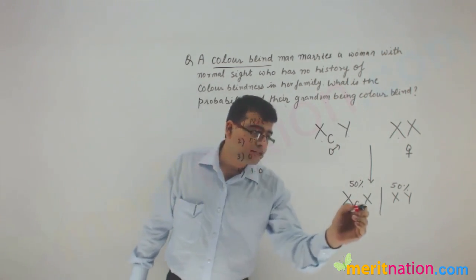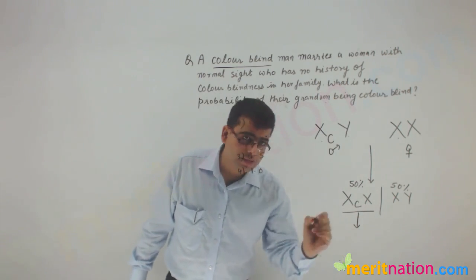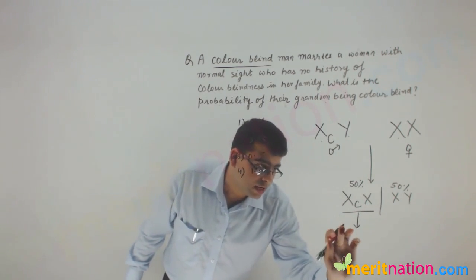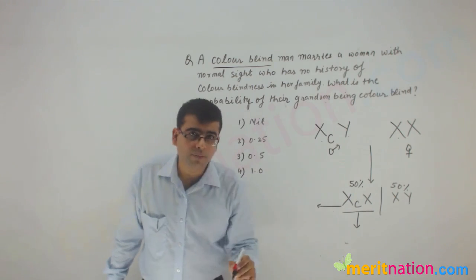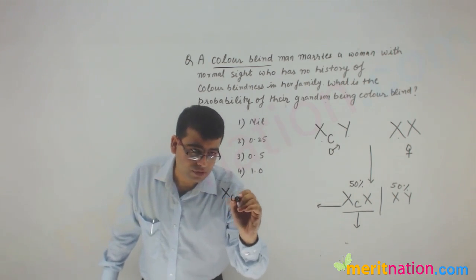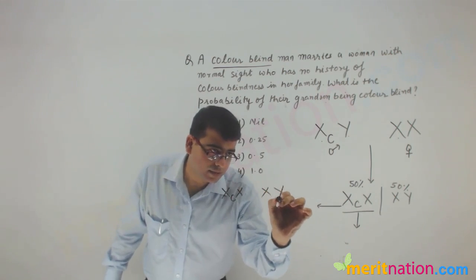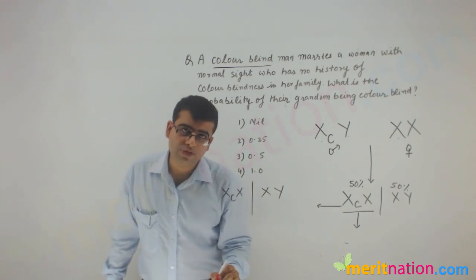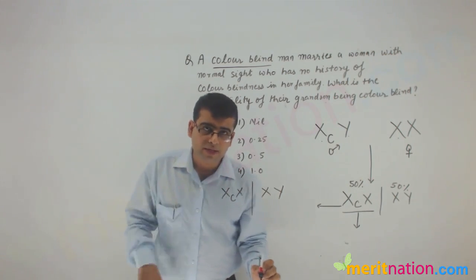Now let us take this further. So as this carrier marries a male which is normal, so this carrier marries a male which is normal, so what we will get?